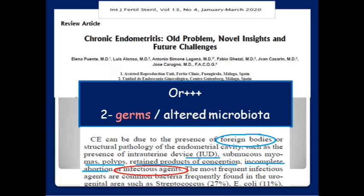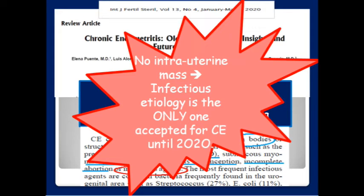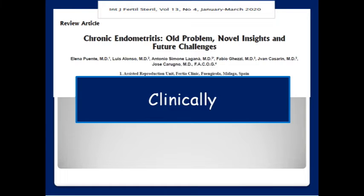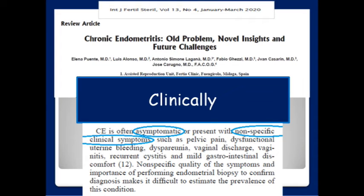Therefore, when no intrauterine mass is identified, infectious etiology is the only one accepted for chronic endometritis until 2020. Clinically, it is often asymptomatic, sometimes presenting with non-specific symptoms like abnormal uterine bleeding, dyspareunia, infertility, repeated miscarriage, etc.